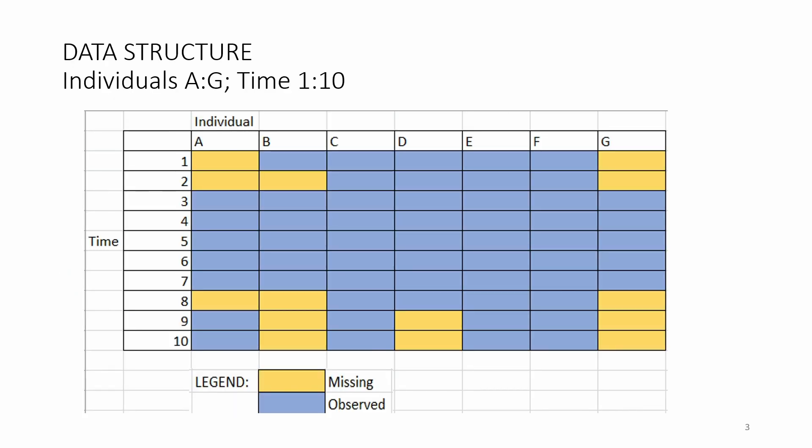Let's clarify what we mean by panel data. This slide shows a dataset where we have seven individuals from A to G that are tracked over a maximum of 10 time periods. In some cases we have missing observations denoted by the yellow cells.